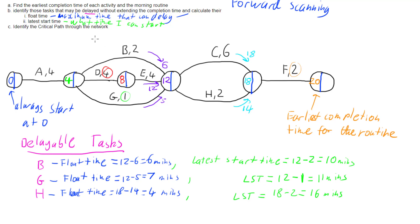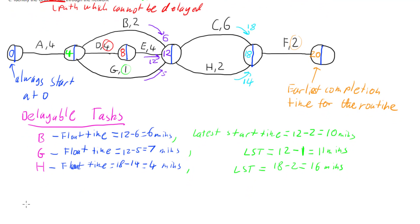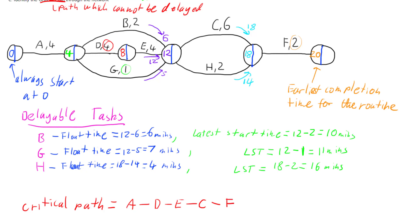Now lastly, we can determine the critical path - the path which cannot be delayed. What is the path through the network that we must stick to? My critical path is the path that doesn't include any delayable tasks. I have to go through A, then through D and E because I can't delay those. I can delay B and G but not D and E. Then I have to go through C, because H was delayable. And finally F, because I have no choice. That's my critical path.